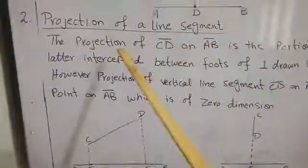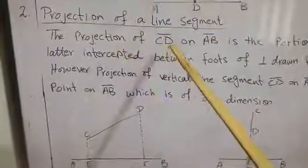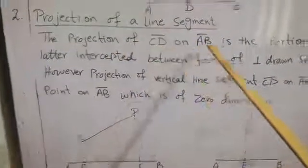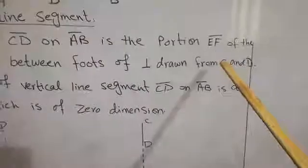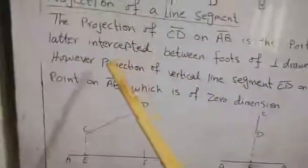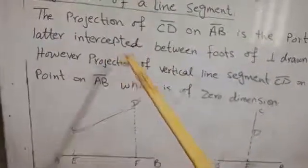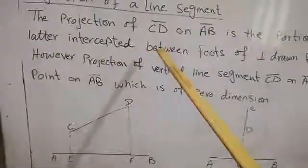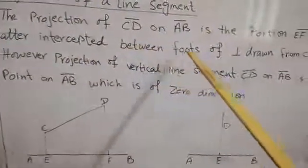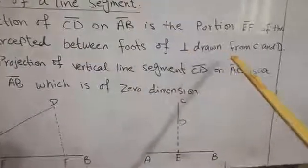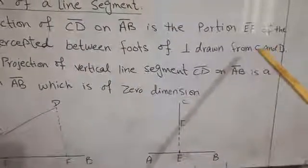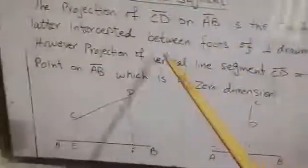The projection of a line segment CD on AB is the portion EF of the line AB intercepted between the feet of perpendiculars drawn from C and D.